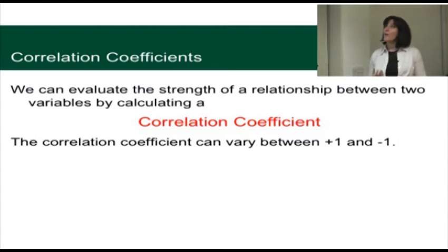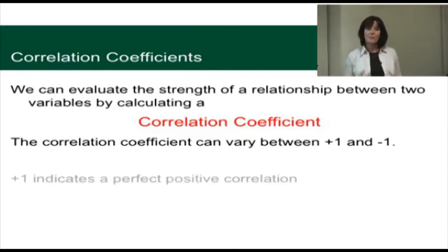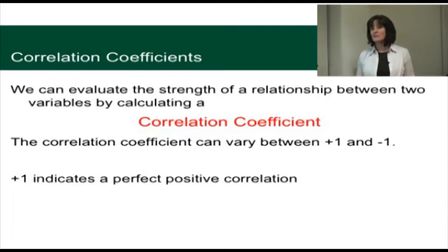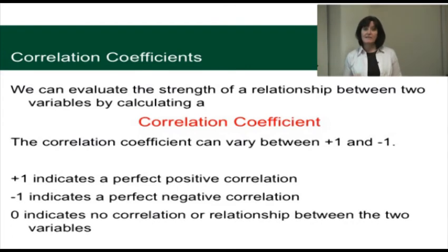We can evaluate the strength of a relationship between two variables by calculating a correlation coefficient. These correlation coefficients can take any value between positive one and negative one. If we get a value of positive one, we have a perfect positive correlation, where all the points would lie on a straight line in an increasing direction. If we get a value of negative one, that's a perfect negative correlation. Zero indicates that there's no correlation between the two variables. So any value between 0 and 1 is valid — for example, 0.6 or 0.7 shows a strong correlation, while 0.2 or 0.3 shows a weaker correlation.